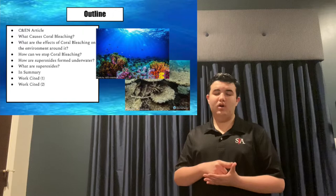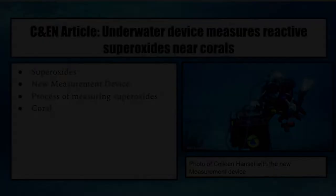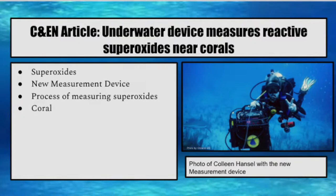The article we will be going over today is called 'Underwater Device Measures Reactive Superoxides Near Corals.' The article begins by explaining the difficulties in measuring different chemical species — specifically the reactive chemical species of oxygen. They go more in depth as they talk about the chemical O2⁻, also known as superoxides, which is produced around corals. We will also be going more in depth on superoxide later in this presentation.